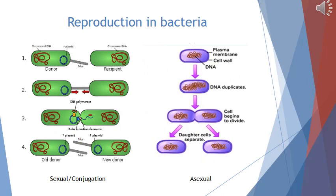Bacteria reproduce by both sexual and asexual methods. In sexual reproduction, two different types of bacteria are involved and an exchange of genetic material takes place, producing bacteria with different DNA and variations. In asexual reproduction, a single bacterium divides into two within 20 minutes if conditions are favorable — food is available, proper temperature and pH are present. This is known as binary fission. The two daughter cells produced are similar to the parent cell.